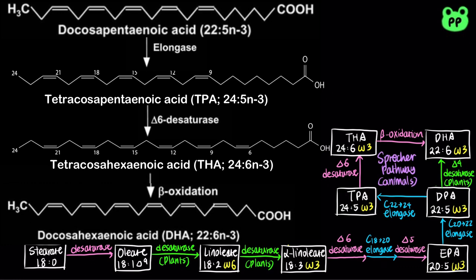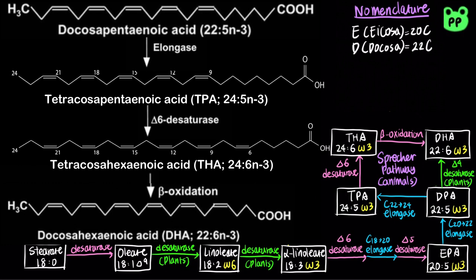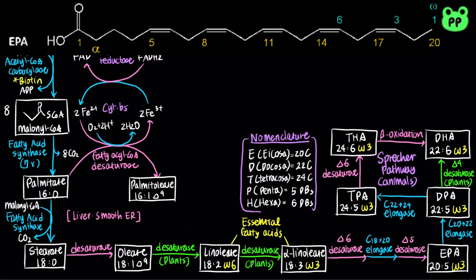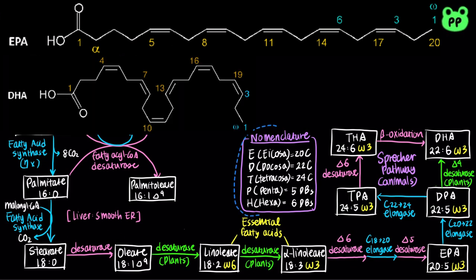Notice that these omega-3 polyunsaturated fatty acids are named using prefixes that refer to the number of carbons and the number of double bonds. For the first prefix: E stands for icosa, which refers to 20 carbons; D stands for docosa, which refers to 22 carbons; and T stands for tetracosa, which refers to 24 carbons. For the second prefix: P stands for penta, which refers to 5 double bonds; and H stands for hexa, which refers to 6 double bonds. From these prefixes, we can infer that EPA is a 20-carbon fatty acid with 5 double bonds, whereas DHA is a 22-carbon fatty acid with 6 double bonds.